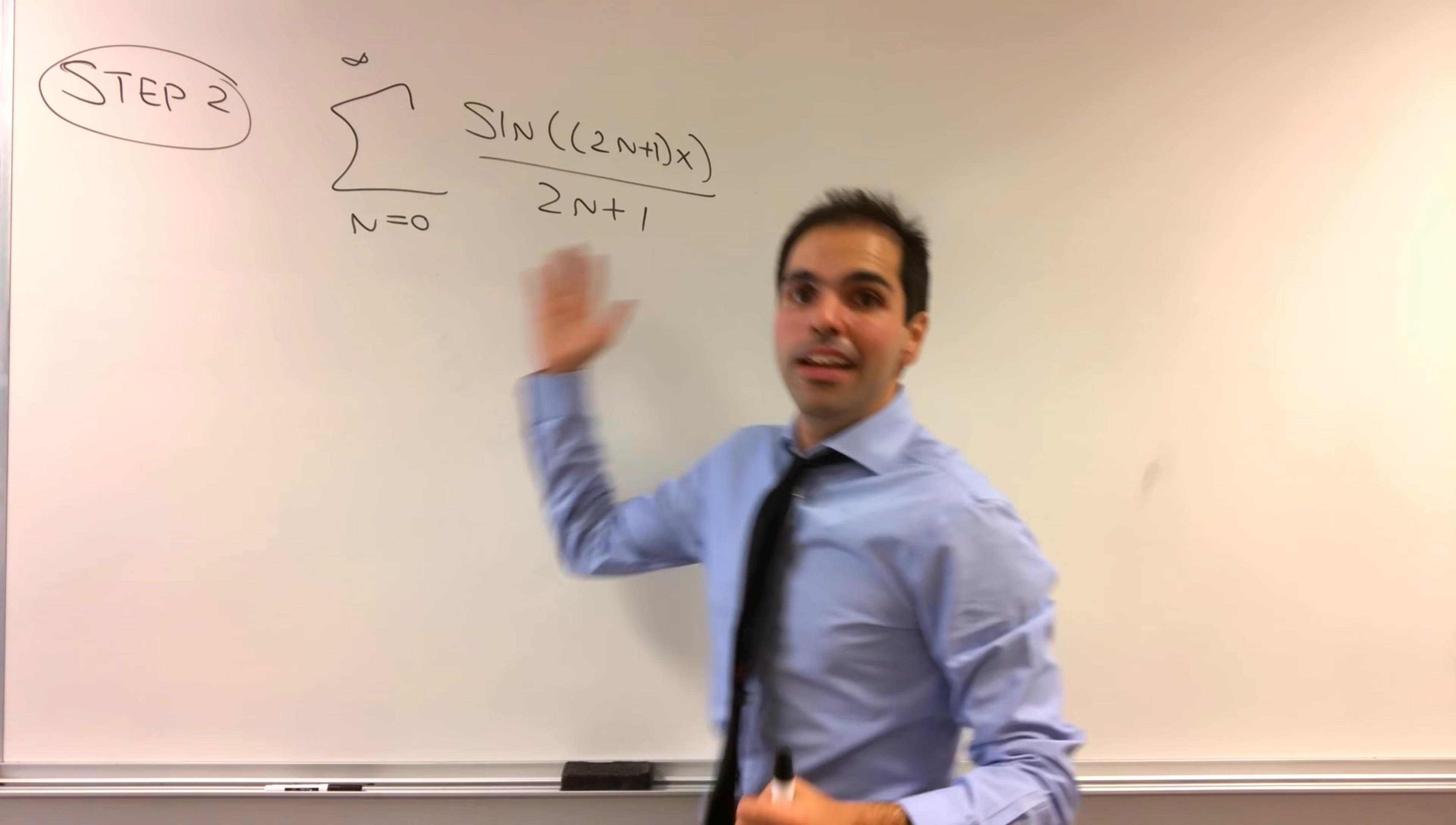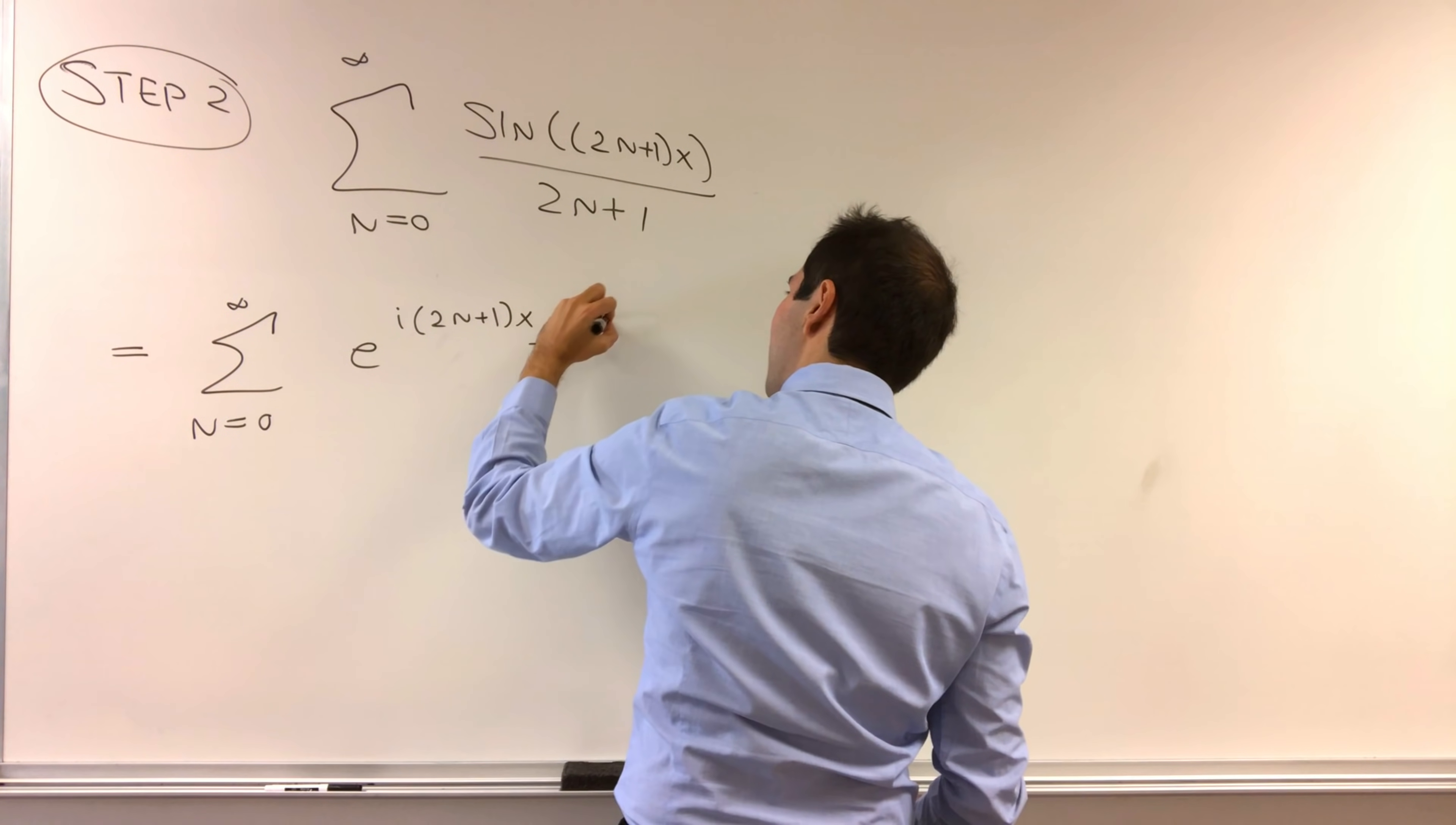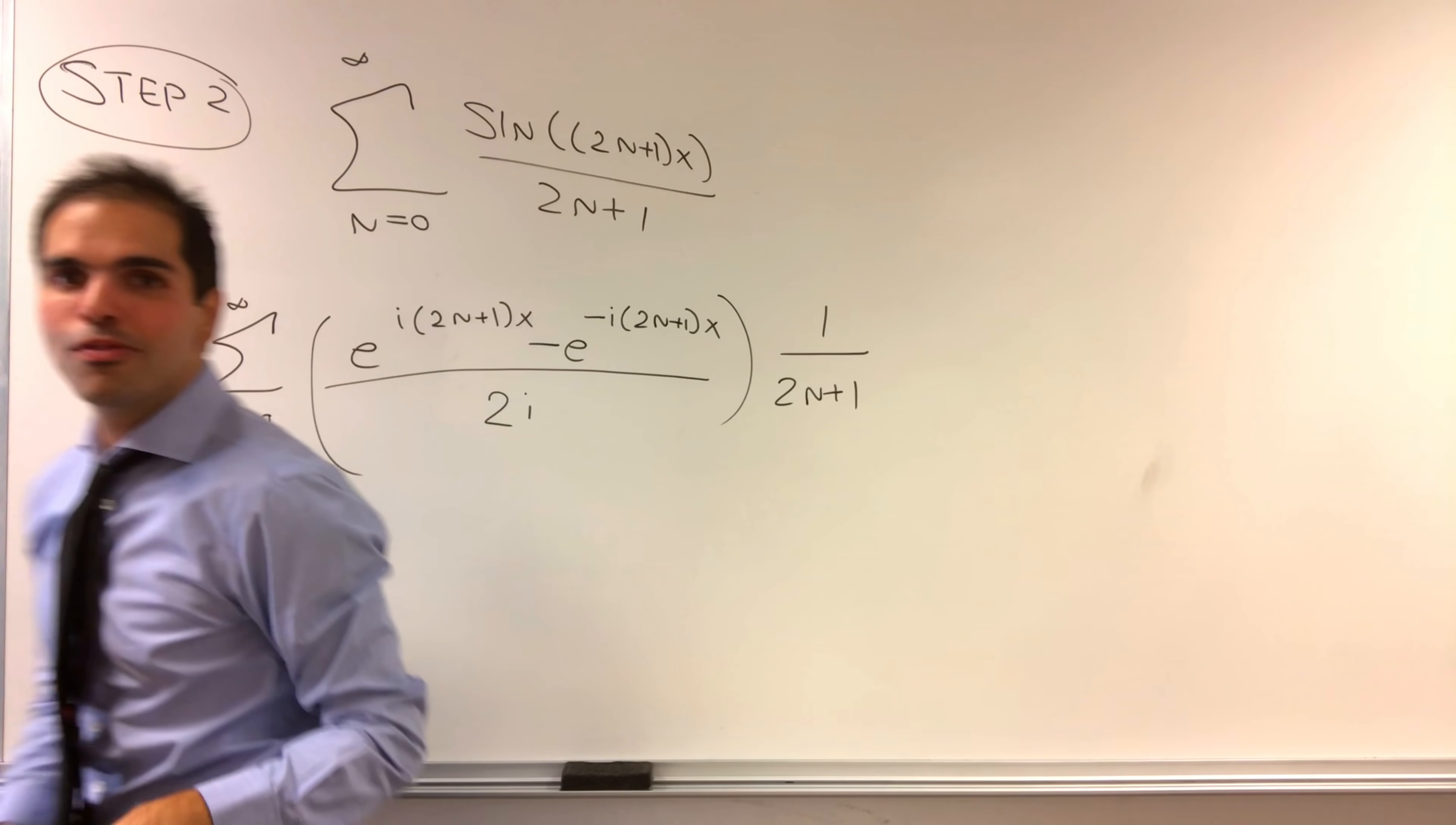So now, in our second step, let's try to write this sum of sine of odd x over an odd number in terms of complex exponentials. So 2n plus 1x over 2i and also this odd number, so 2i times 1 over 2n plus 1. And now, let's split it up assuming convergence is not an issue. In other words, let's put our applied math hat on.